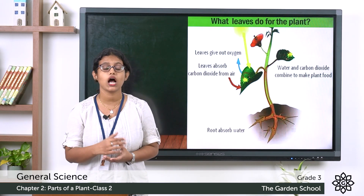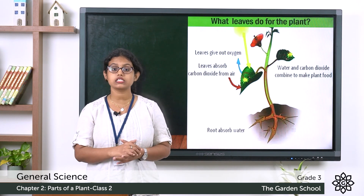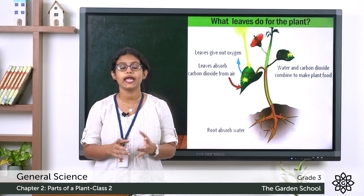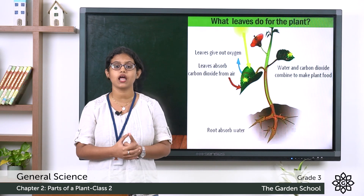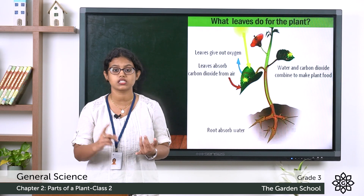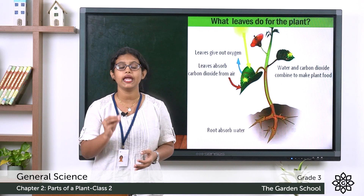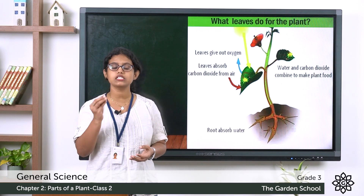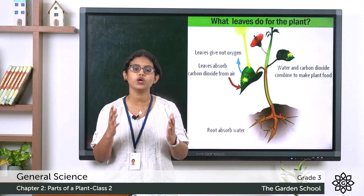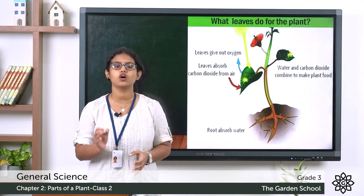The extra food is stored by the plant. In some plants the extra food is stored in their roots and stems, and there are plants which store their food in their leaves — like spinach, cabbage, and lettuce. These leaves are called the food factory of a plant because they prepare food for the plant.